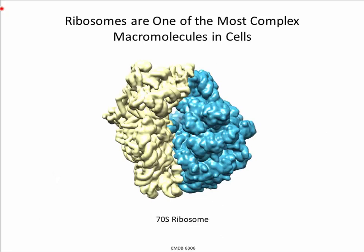Ribosomes are one of the most complex and abundant macromolecules found in cells, with a size of about 2.5 megadaltons. The ribosome functions as the protein manufacturing machine by translating genetic information into functional proteins and is therefore central to all life. Shown here is a cryo-electron microscopy density map of the prokaryotic ribosome representing the 3 RNA molecules and more than 50 proteins it is composed of.